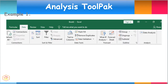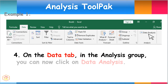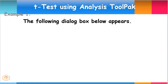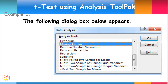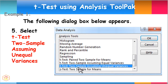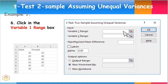Now that the ToolPak has been added, click on the Data tab menu. In the Analysis group found on the far right side of the menu, click on Data Analysis. After selecting the Data Analysis tab, a dialog box appears. From the choices of different analysis tools, select the t-test: Two-Sample Assuming Unequal Variances, then click OK. To input the data for work hours of the six male workers, click in the Variable 1 Range box and select the range cells from A2 to A7.